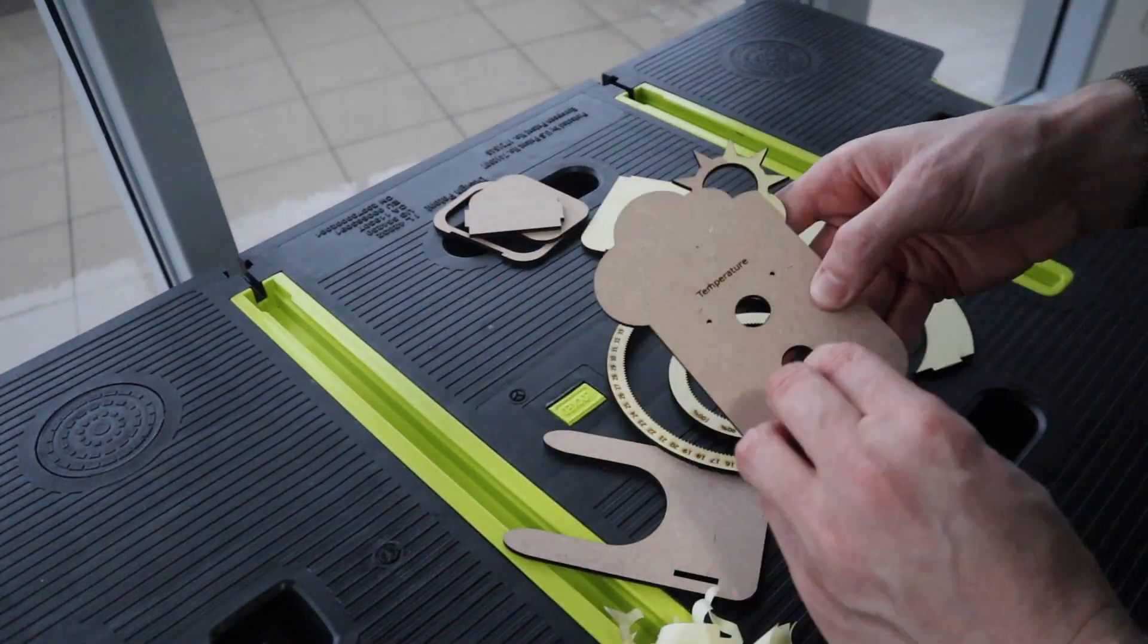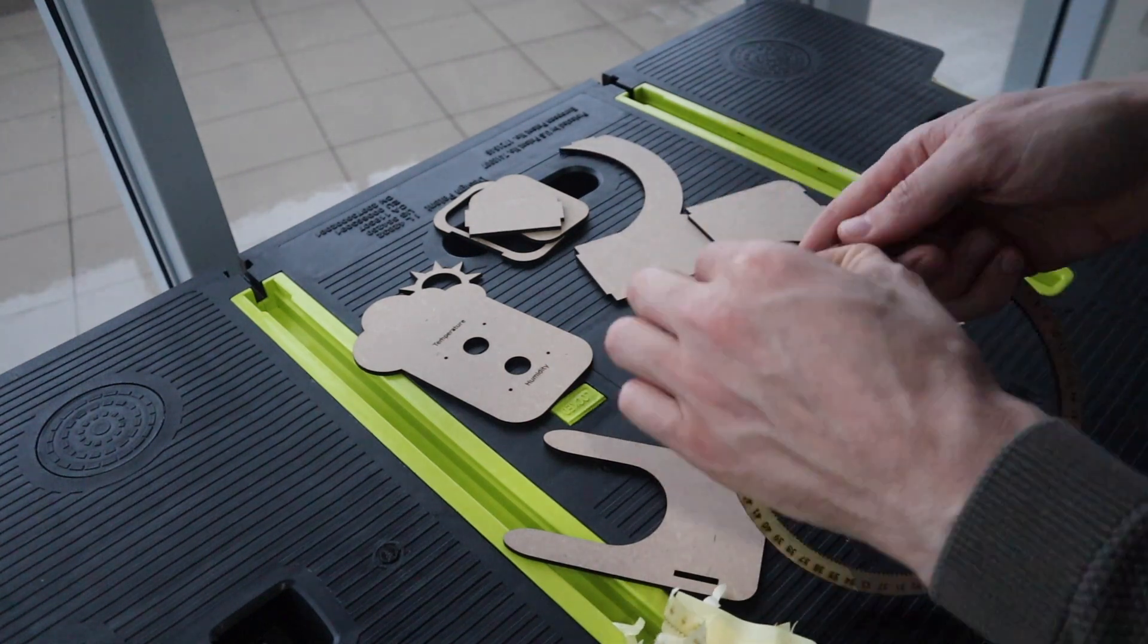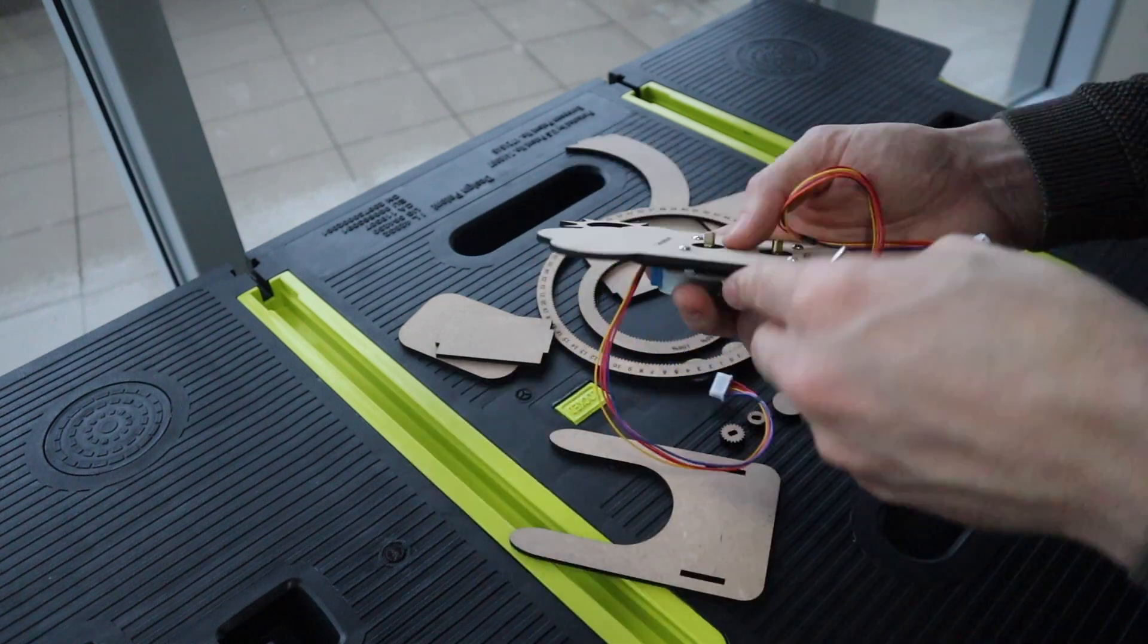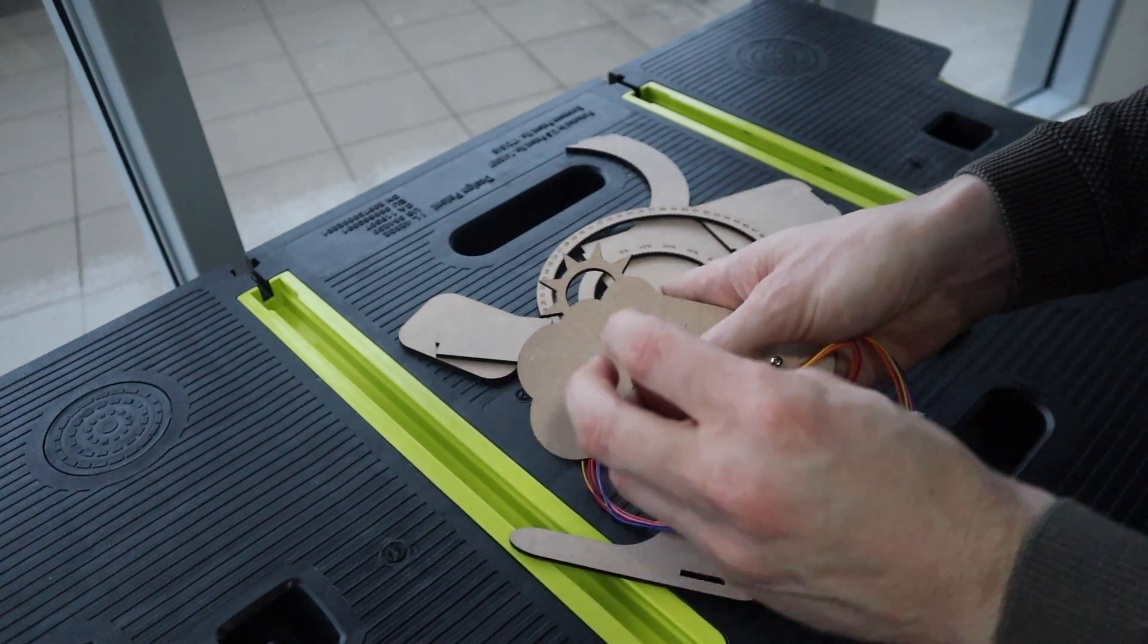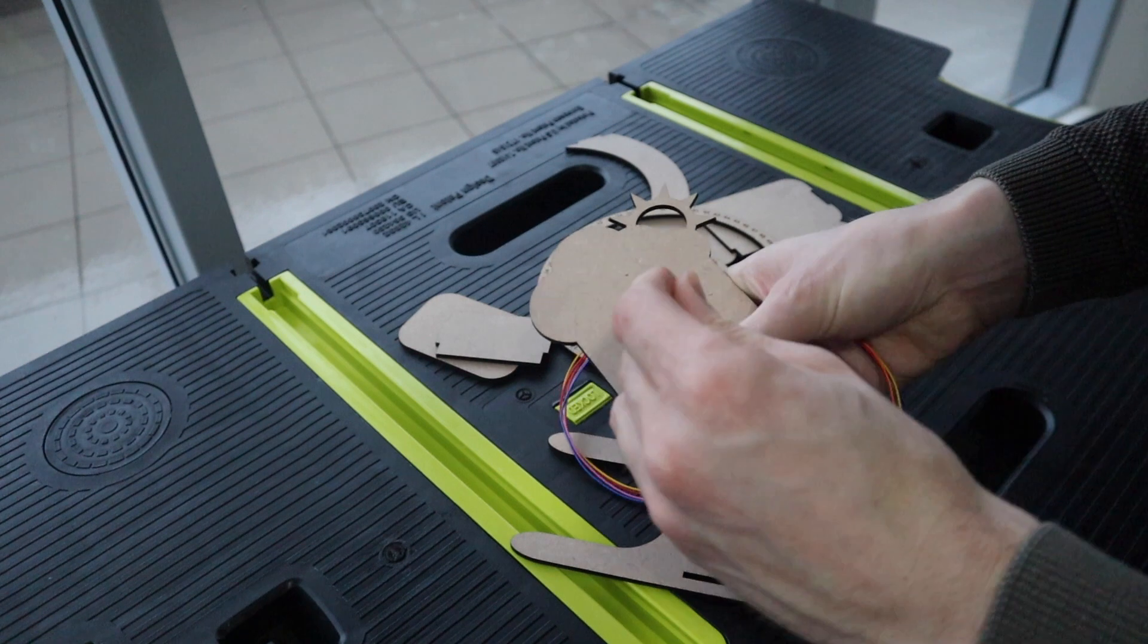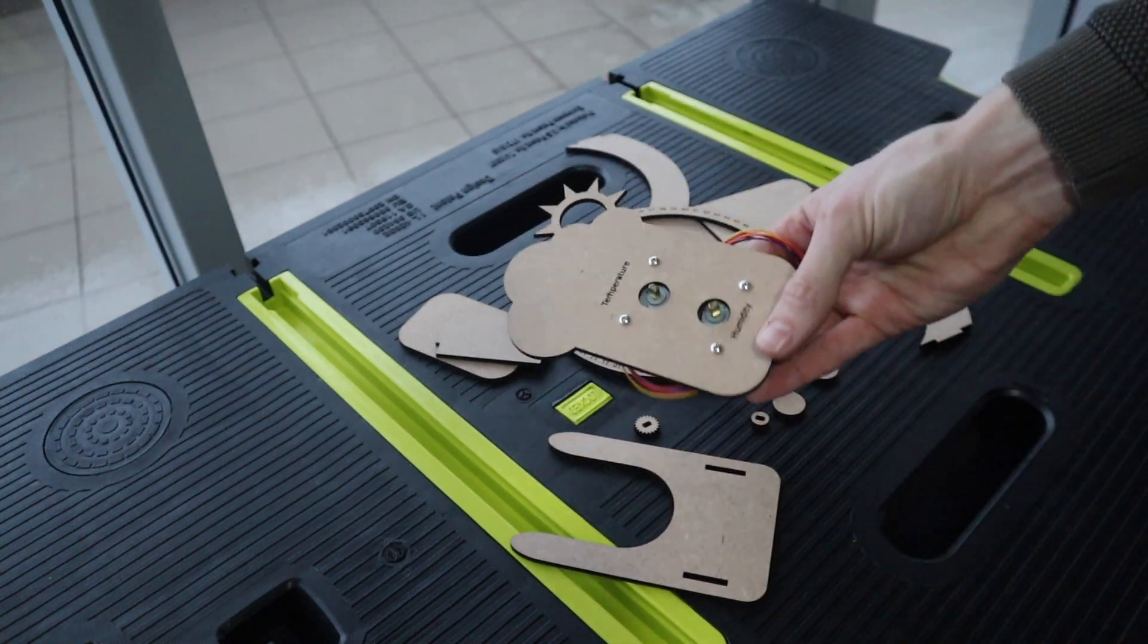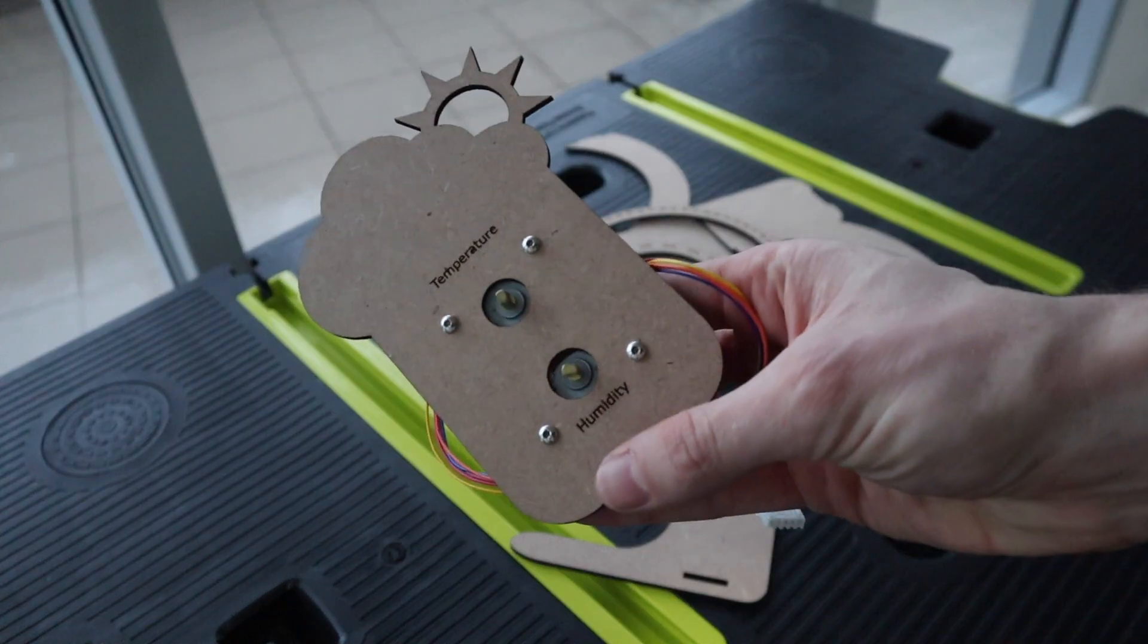Once all of the parts are cut, you'll need to remove the masking tape. Next, secure the two stepper motors to the front plate using two M3 by 10mm machine screws for each motor. Also glue the stand support plate with a cutout for the motors to the back of the front plate using some wood glue.